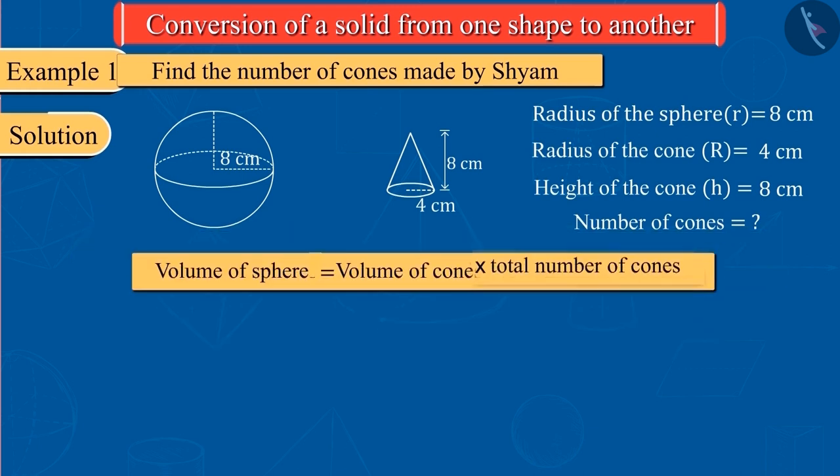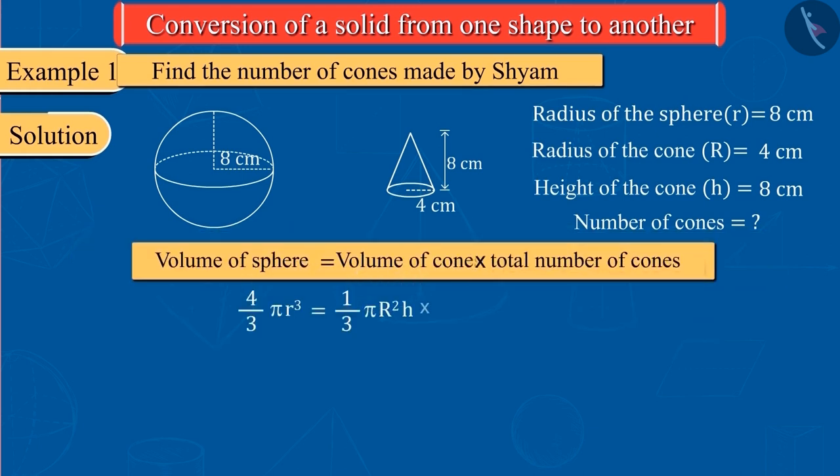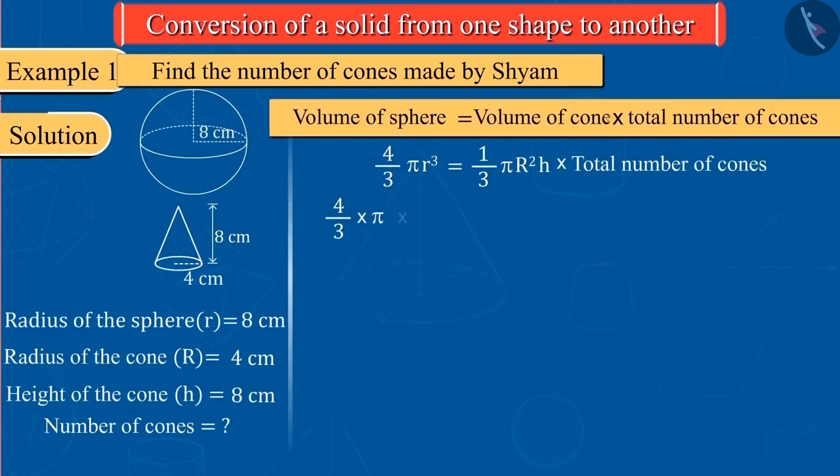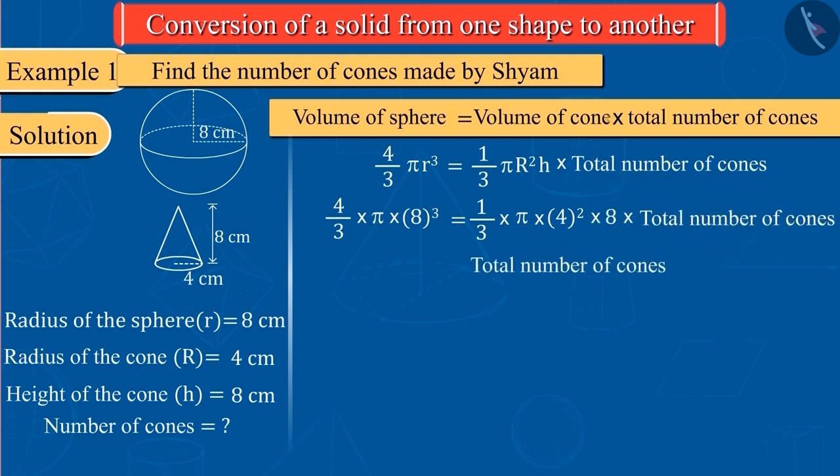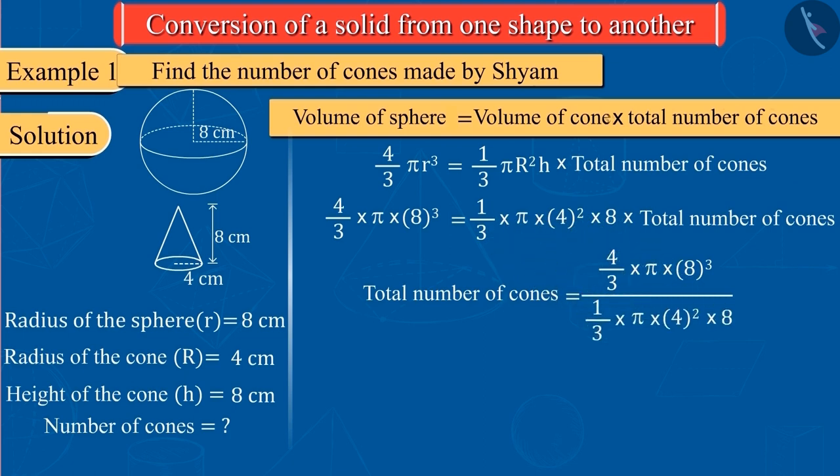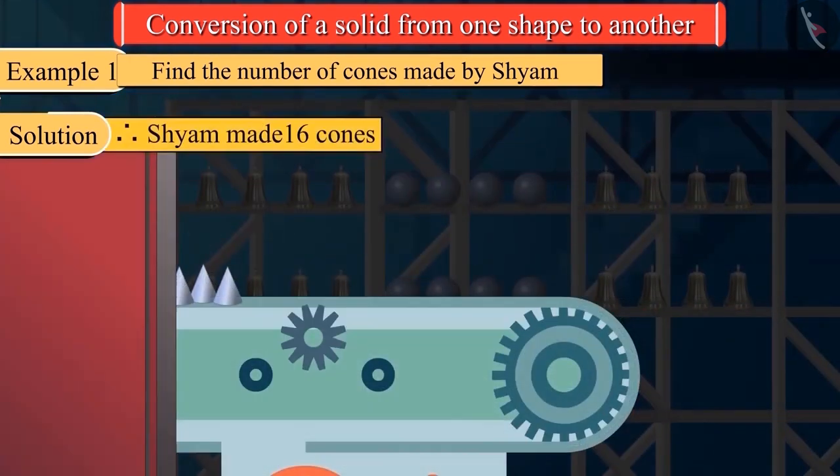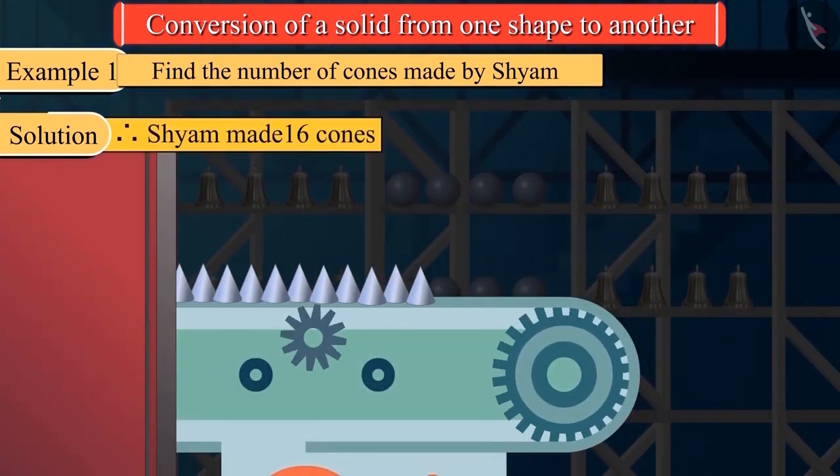We know that the volume of sphere and cone can be determined by these formulas. Substituting all values, we get 16. So, Shyam makes 16 cones in this way.